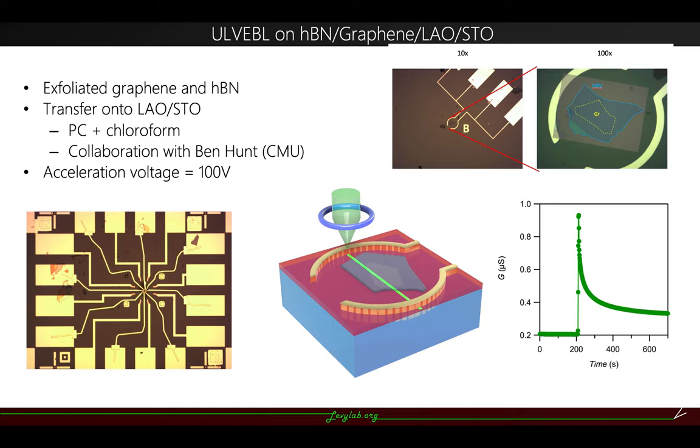We collaborated with Ben Hunt from CMU. And here you can see, as we are connecting two electrodes across the boron nitride graphene piece, we can also observe a clear conductance jump from this writing process, which shows that we can write through